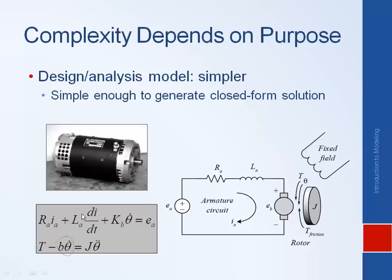So we can generate a closed form solution of this. Or maybe we can't yet, but by the end of this class you will be able to solve this equation. And so I could say this is the voltage input to the motor, and then you could solve this equation for that input and tell me exactly what the equation would be for the speed response. And so having this closed form solution gives you a lot of intuition. You can look at the solution and see exactly how the different parameters affect the response. How does the resistance affect the response? How does the inertia of the motor affect the response?